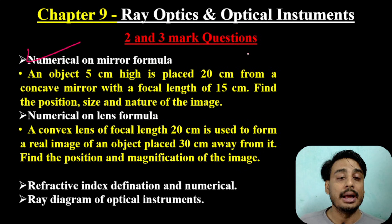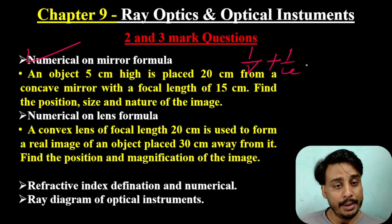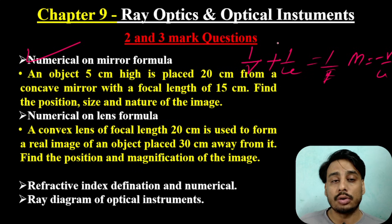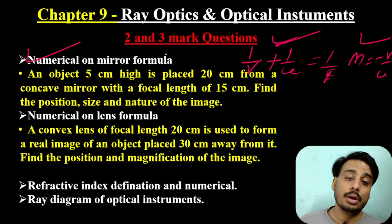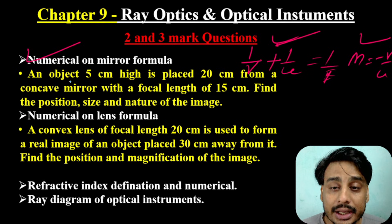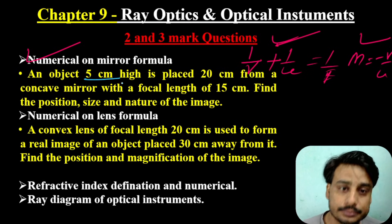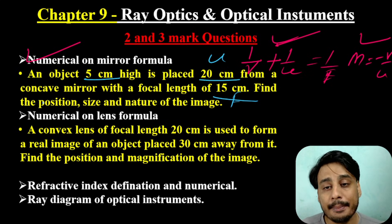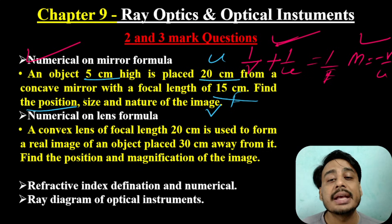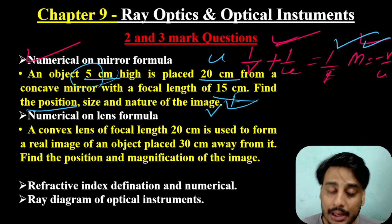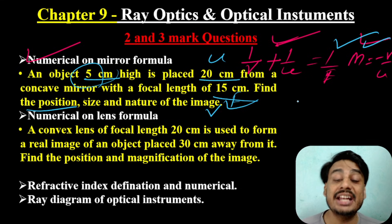This is the numerical and mirror formula. The formula is 1/v + 1/u = 1/f. The magnification is -v/u. For example, the object is 5 cm and placed 20 cm from the concave mirror with focal length 15 cm. We calculate the position, the size, and the magnification. The sign convention is the most important — the sign convention applies to distances.